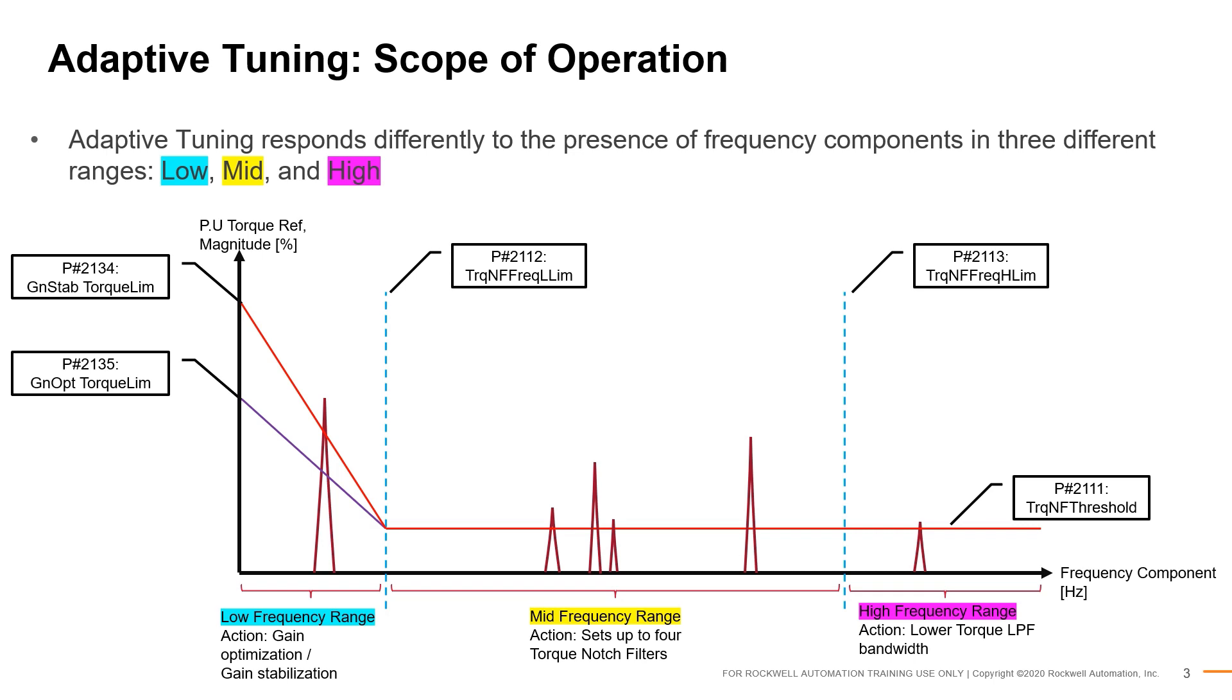The three frequency ranges can be configured using parameter number 2112 and 2113, while the thresholds in a unit of percent torque are configured using parameter numbers 2111, 2134, and 2135. All of the adaptive tuning configuration parameters can be found under the adaptive tuning subsection of the torque parameter family.